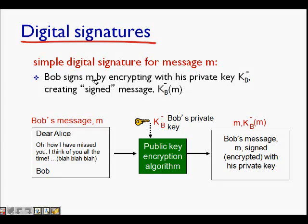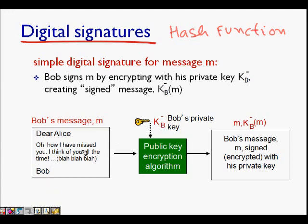In this lecture we will learn about digital signatures using hash functions. We will use hash functions to make the digital signature smaller. In the last class we learned that Bob is sending a message to Alice — 'Dear Alice, I love you, how I have missed you' — and he wants to encrypt this message and have a digital signature, so that Alice can verify it was sent by Bob and not forged by someone like man-in-the-middle Trudy, and that Bob cannot repudiate having sent it.